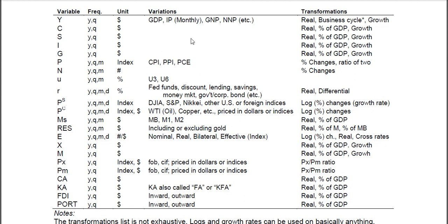G is government spending. There are all sorts of different versions in the database, but again, you can have real government spending, percentage of GDP, or the growth of government spending. P is price level — you can get a monthly CPI. It's an index, so there's no unit on it, and it has a base year of 100. CPI is most common, but you could also have the producer price index or personal consumption expenditures.